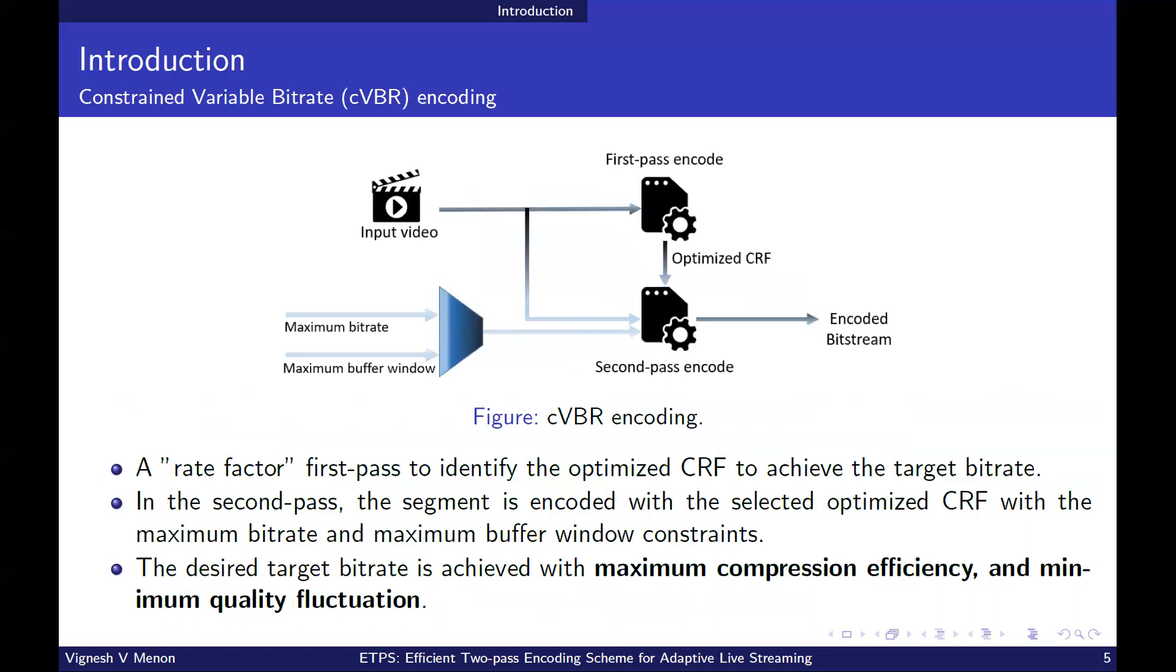The CVBR two-pass encoding works with the rate factor first pass to identify the optimized CRF to achieve the target bitrate. In the second pass, the segment is encoded with the selected optimized CRF with the maximum bitrate and maximum buffer window constraints. In this manner, the desired bitrate is achieved with maximum compression efficiency.